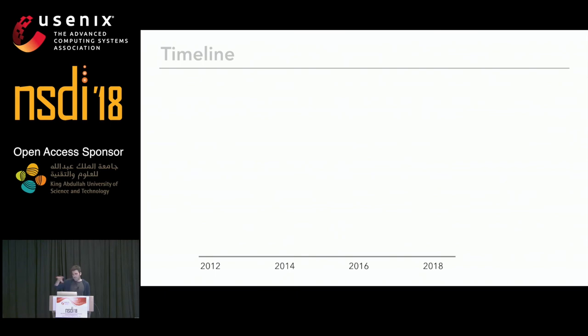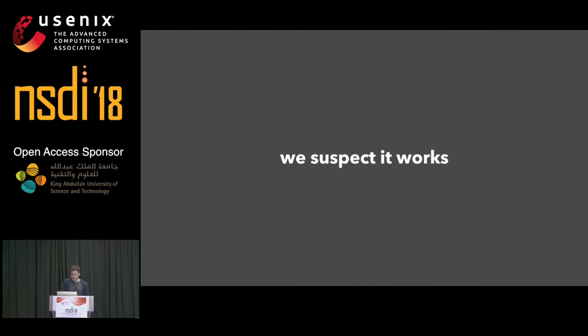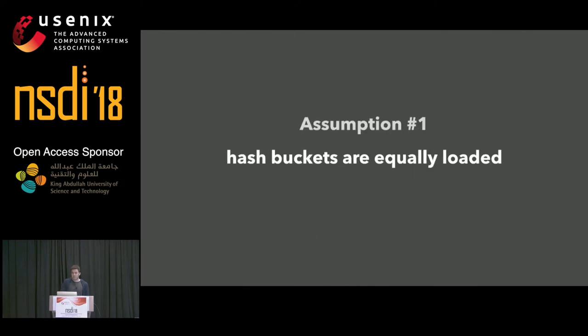A big part of this paper is the operational aspect. We deployed FAIL-D in late 2013 and grew significantly since, now handling around 300 billion requests per day. At this point we're fairly confident it works. But there were a bunch of assumptions broken along the way that we had to work around, and the paper details that. Some of these look ludicrous in retrospect — one assumption being that hash buckets are equally loaded, which you'd think vendors implement correctly.